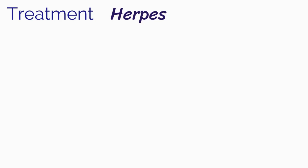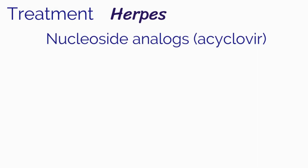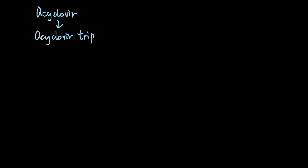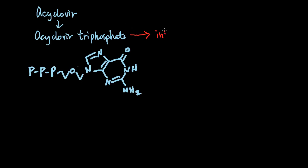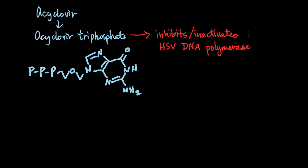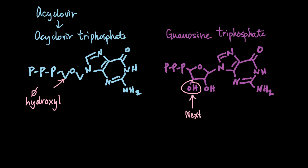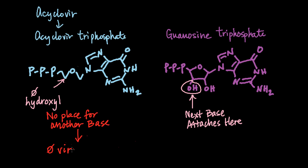Treatment for HSV is with nucleoside analogs such as acyclovir. It is not curative, but can decrease the frequency and severity of outbreaks. Acyclovir is converted to acyclovir triphosphate, which competitively inhibits and activates HSV DNA polymerases. Note the similarity between guanosine triphosphate and acyclovir triphosphate — the difference is a hydroxyl group. This is where the next DNA base is added. The lack of a hydroxyl group on acyclovir results in chain termination since there is no place for another base to attach, preventing further viral DNA synthesis.